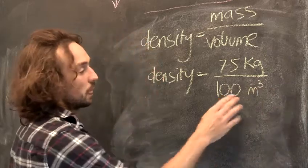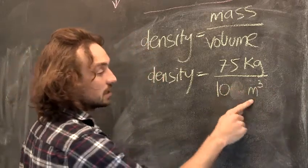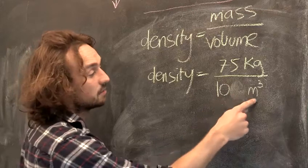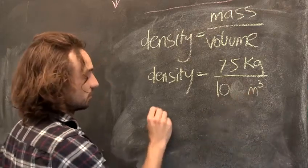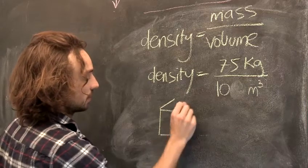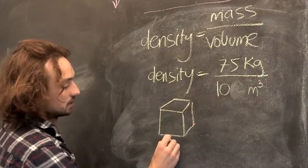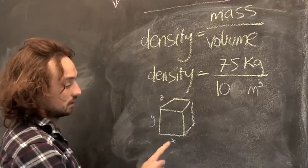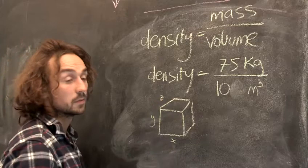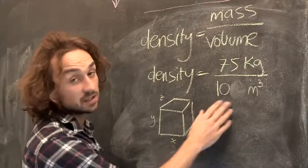Volume is measured in metres cubed. That is, metres cubed is a measure of your volume. So if this was a square, you would take this length, this length and this length, multiply them together to give your volume. Now let's say my volume is 10 metres cubed, and then my density is 7.5, 75 divided by 10 kilograms per metres cubed.